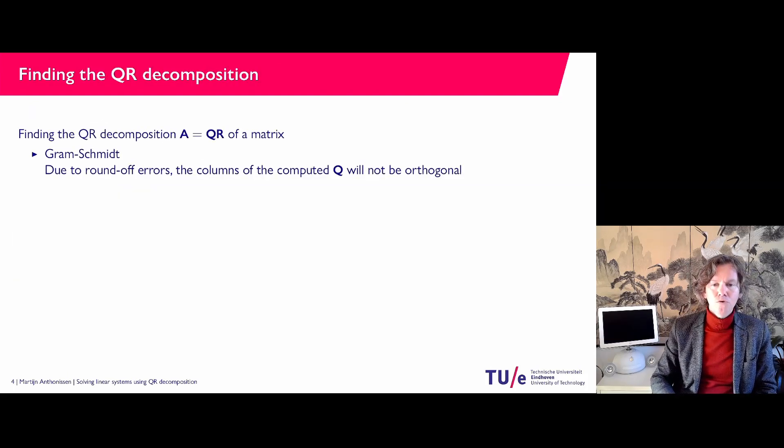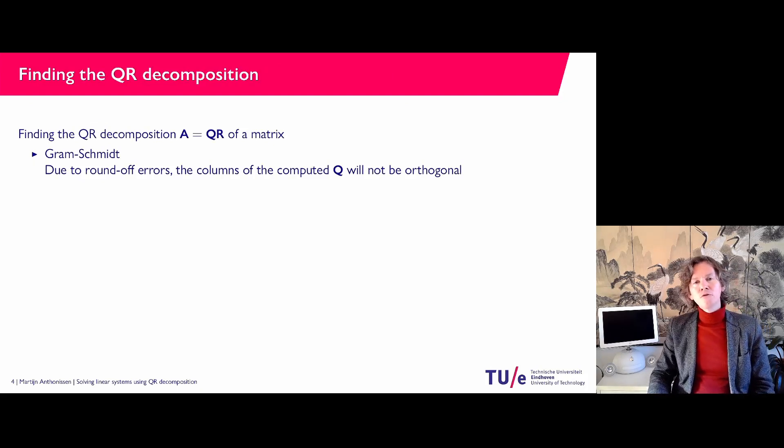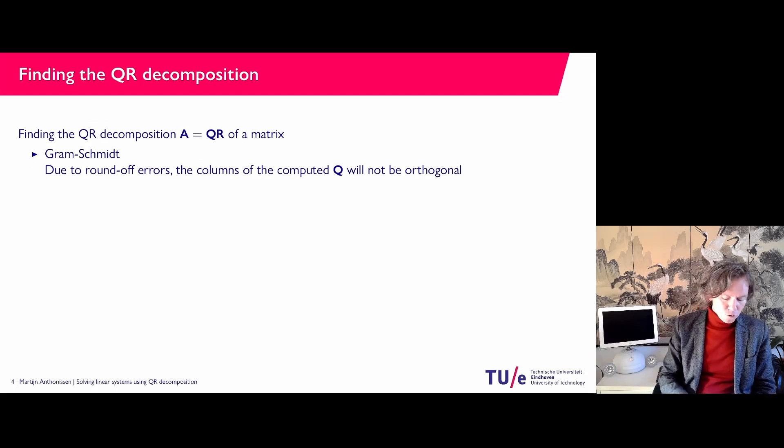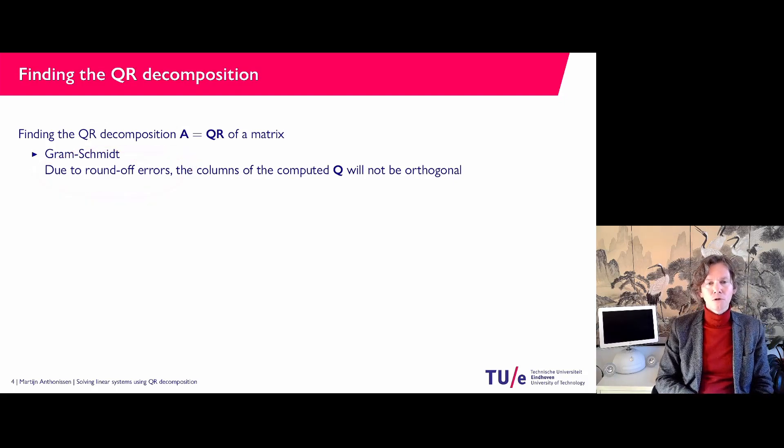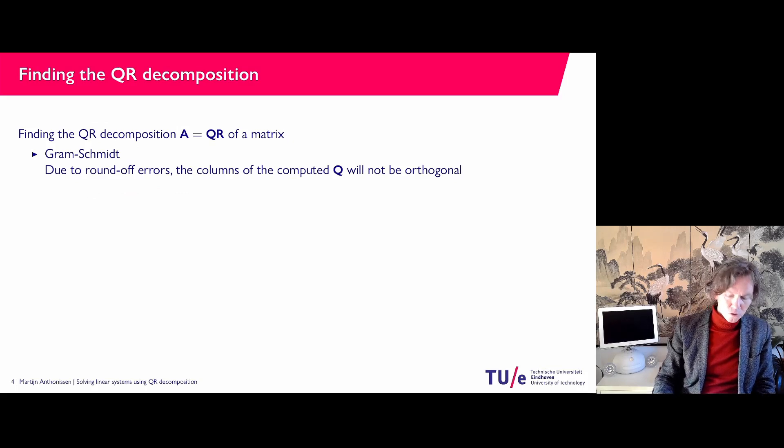Now how do you find a QR decomposition? In a previous video where we discussed QR decomposition I presented the Gram-Schmidt method, but if you do that numerically then due to round-off errors the columns of your Q matrix will not be truly orthogonal. Q is an orthogonal matrix which means that the columns of Q...